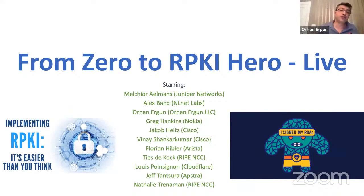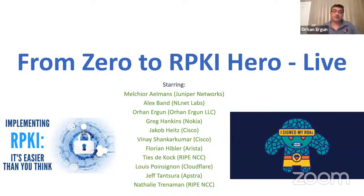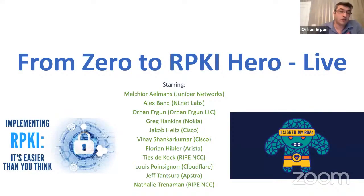Not only configuration will you see, but also we will install three different route validators: Routinator from NLNet Labs, OctoRPKI from Cloudflare, and the RIPE validator. As you can see on the screen, the attendees names — we really worked a lot. So many people from vendors and from the regional internet registry are with us, and also all existing validator tools will be shown.